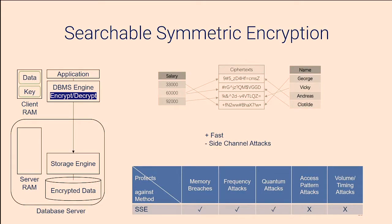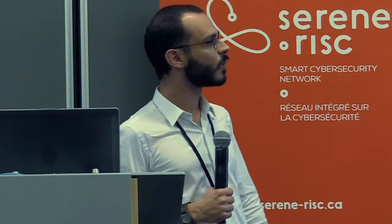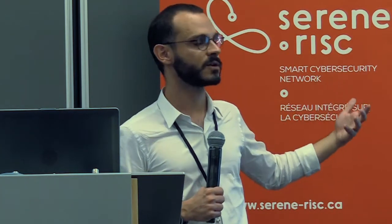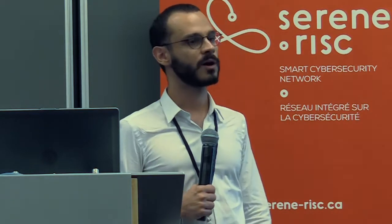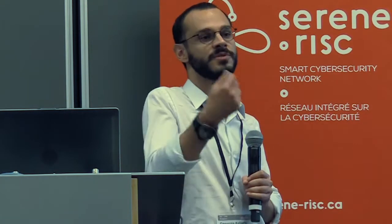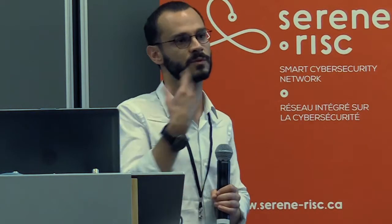The problem is this solution suffers from side channel attacks. For example, if someone observes the database server — say Amazon — they can see what's happening with encrypted data on disk. They observe that you queried for salary $33,000 and retrieved the fourth encrypted record. No one can decrypt that record without the key, but now they know the last record has a salary of $33,000. Then when a query for someone named George returns the same record, Amazon can infer that George has a salary of $33,000. By observing more queries, they can infer all the database information without ever decrypting it.